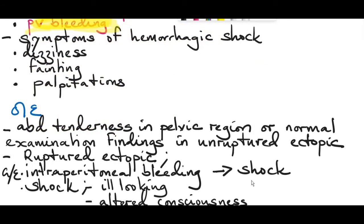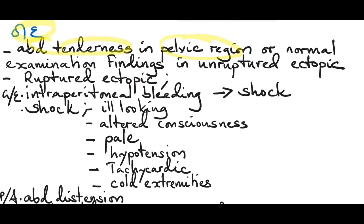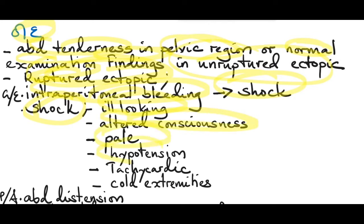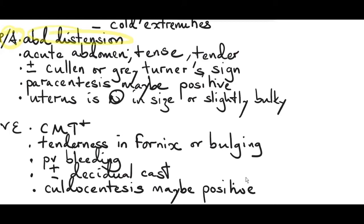The patient might present in hemorrhagic shock with dizziness, fainting, palpitations, or even in an unconscious state. On examination, there will be abdominal tenderness in the pelvic region, or normal findings in an unruptured ectopic pregnancy. In a ruptured ectopic pregnancy, on general examination the patient may be in shock due to intraperitoneal bleeding, presenting as an ill-looking patient with altered consciousness, pallor, low blood pressure, tachycardia, and cold extremities. On abdominal examination, there will be lower abdominal distension from intraperitoneal hemorrhage, with a tense and tender acute abdomen.